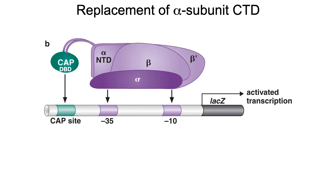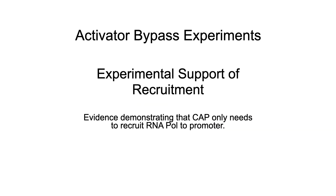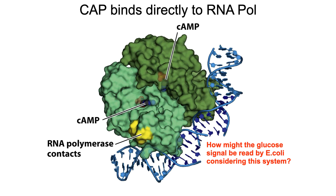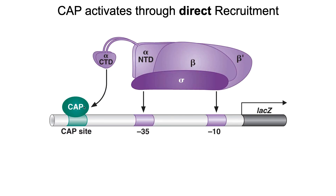Then they did something different. They reasoned: if the only reason for CAP is to stick to the alpha carboxy terminal domain, then let's replace the alpha carboxy terminal domain with the DNA binding domain of the CAP protein, leave the CAP site there, and delete the CAP protein altogether from the cell. Does that work? Yes, it does. So these two activator bypass experiments — getting rid of the CAP binding protein and engineering these systems — show that lac-Z is still expressed. This supports the idea that all CAP is doing is acting as a third sticky site: one at minus 10, another at minus 35, and a third sticky site at the CAP protein.